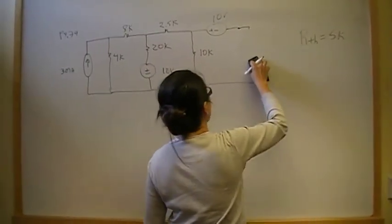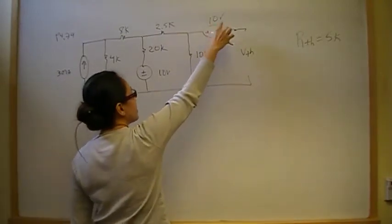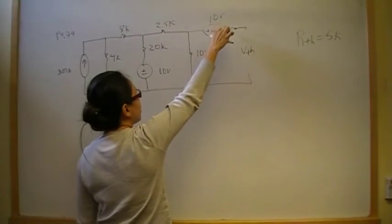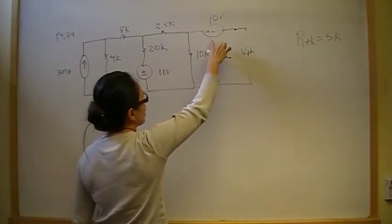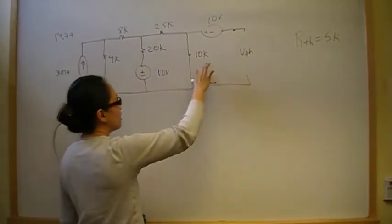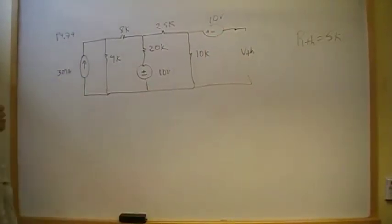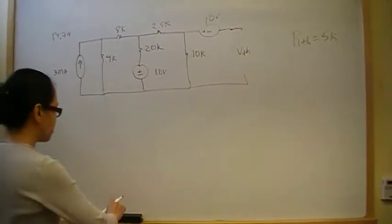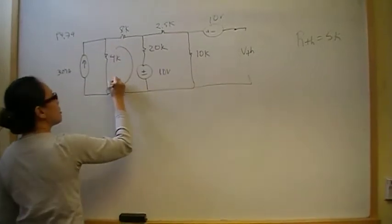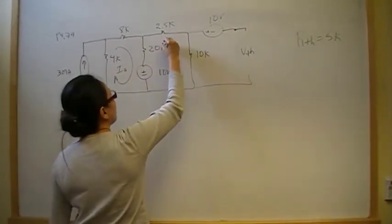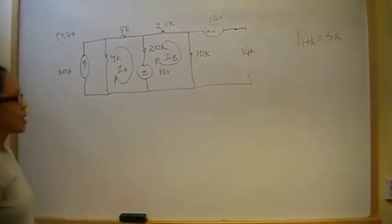With the load open, the Thevenin voltage is seen looking into the open terminals. Notice the 10-volt independent voltage source goes from plus to minus at those terminals, meaning there is a drop. So V-Thevenin equals the voltage drop across the 10k resistor minus the 10-volt source. The mesh current for the leftmost loop is just 3 milliamps. We define mesh current Ia for the middle loop and Ib for the right loop. Since the load is open, there is no mesh current there.